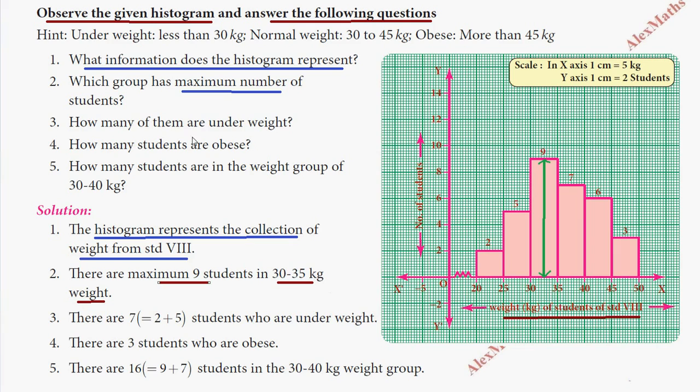Question three: How many of them are underweight? Underweight means less than 30 kg. Obese is more than 45 kg, and in between 30 to 40 is normal. Looking at the histogram, values below 30 are here. Adding these values, we get a total of 7 students who are underweight.